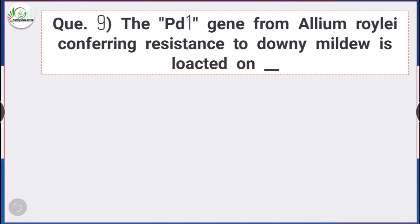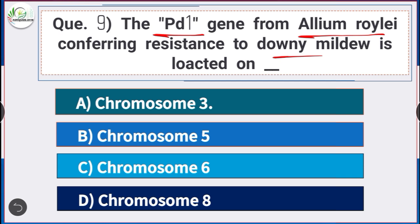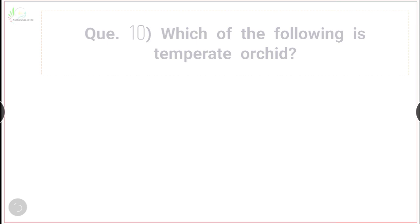Question number 9: The Pd1 gene from Allium roylei conferring resistance to downy mildew is located on answer option A — chromosome 3. Question number 10: Which of the following is a temperate orchid? Answer is option A — Cymbidium. Cymbidium is an example of a temperate orchid.